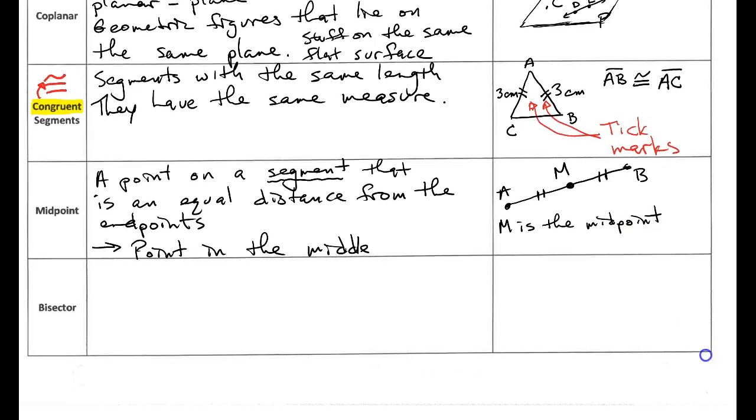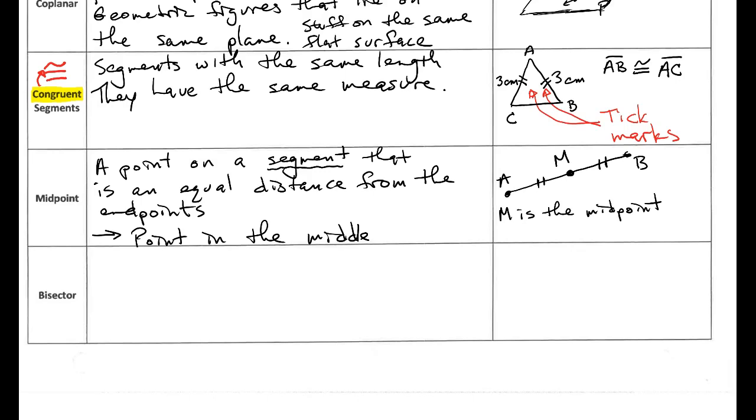And an idea that's similar to this is a bisector. So this is a figure. It could be a segment or it could be a ray or it could be a line that divides another figure into two congruent parts.